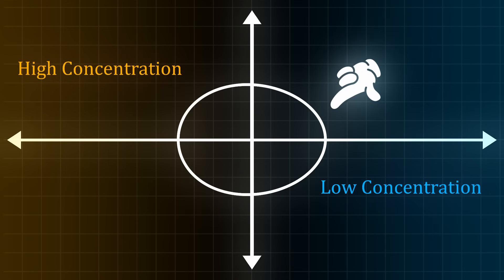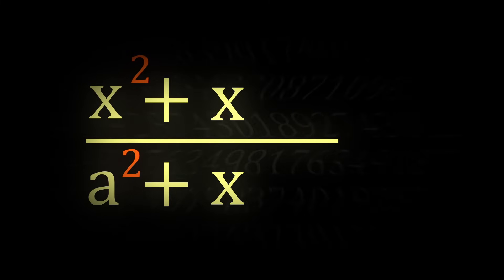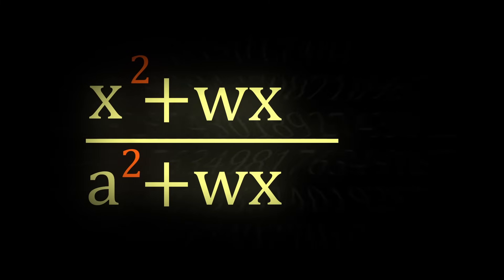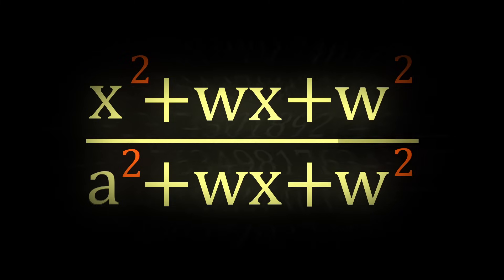We can accomplish this by adding x to both the denominator and the numerator and multiplying it by w, our weighting variable that controls how lopsided it is. Then we can add w squared at the end of both in order to fix it back in its center at the origin.